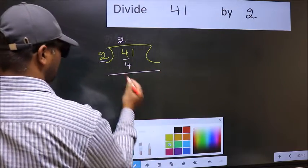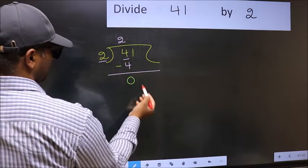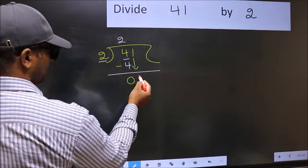Now you should subtract. 4 minus 4, 0. Now you should bring down the beside number. So 1 down.